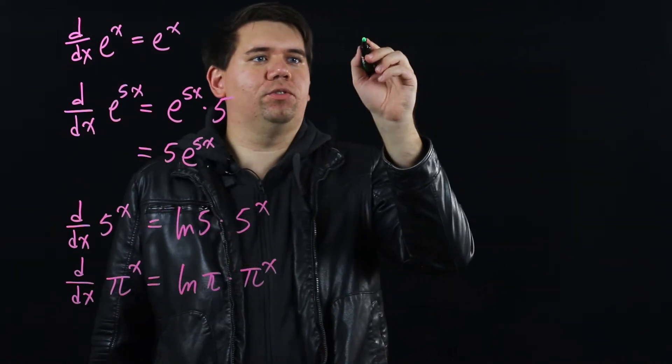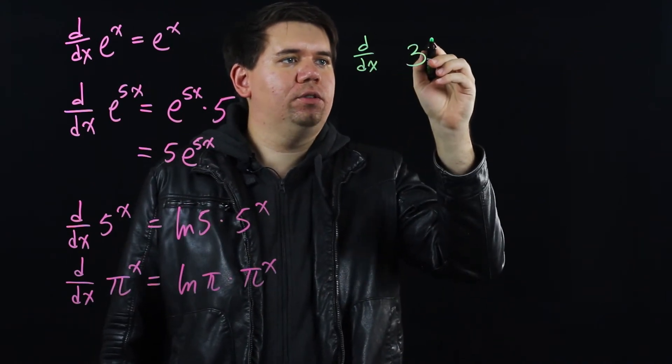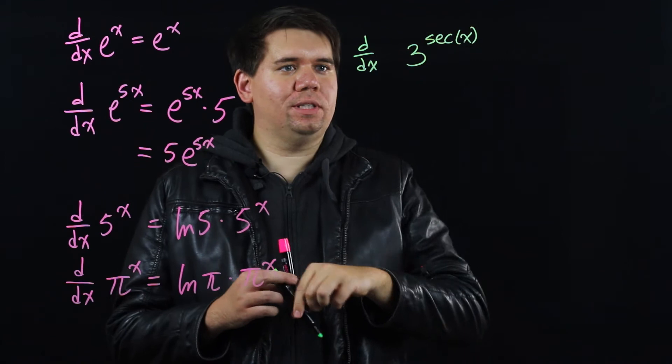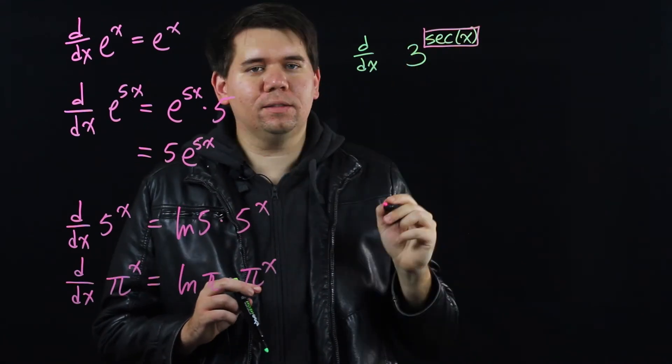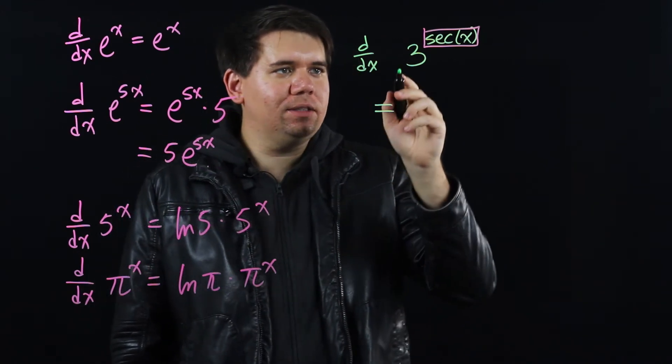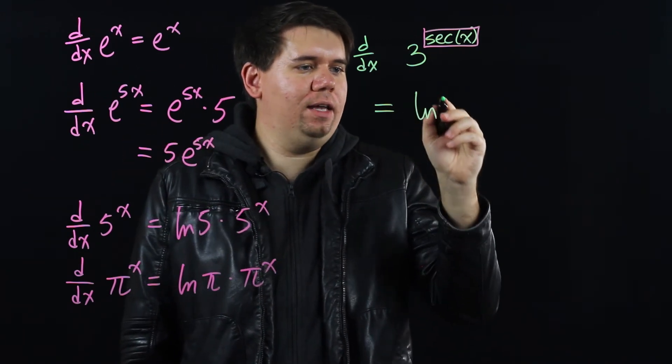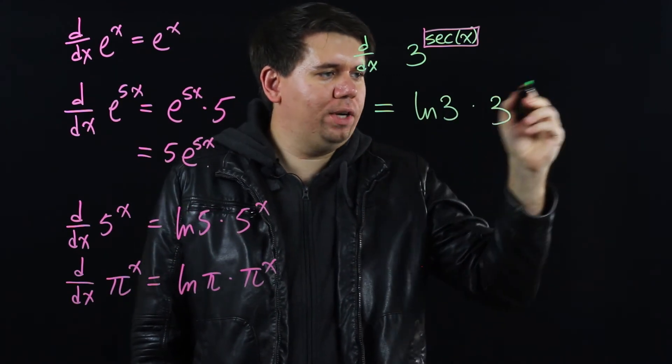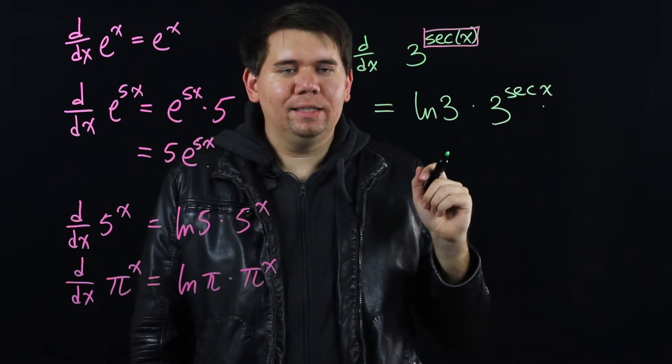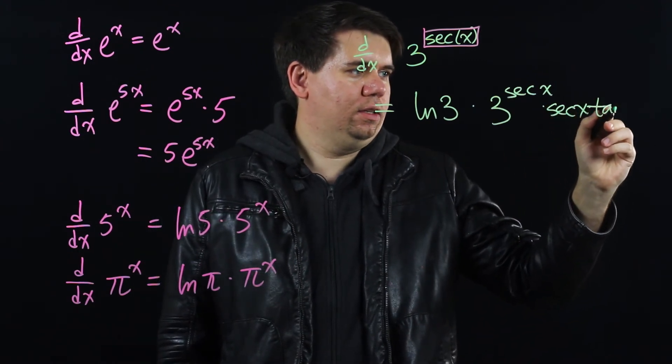What if you have something like the derivative of 3 to the secant of x? We're going to need to use the chain rule. The chain rule says recognize there's an inside function here secant of x. And leave that inside function the same. And first just take the derivative of that outside function. So the outside function 3 to the. Its derivative by our rule right here is just going to be ln of 3 times 3 to the, keeping the inside the same times 3 to the secant of x. But then the chain rule kicks in times the derivative of secant which is secant of x times tangent of x.